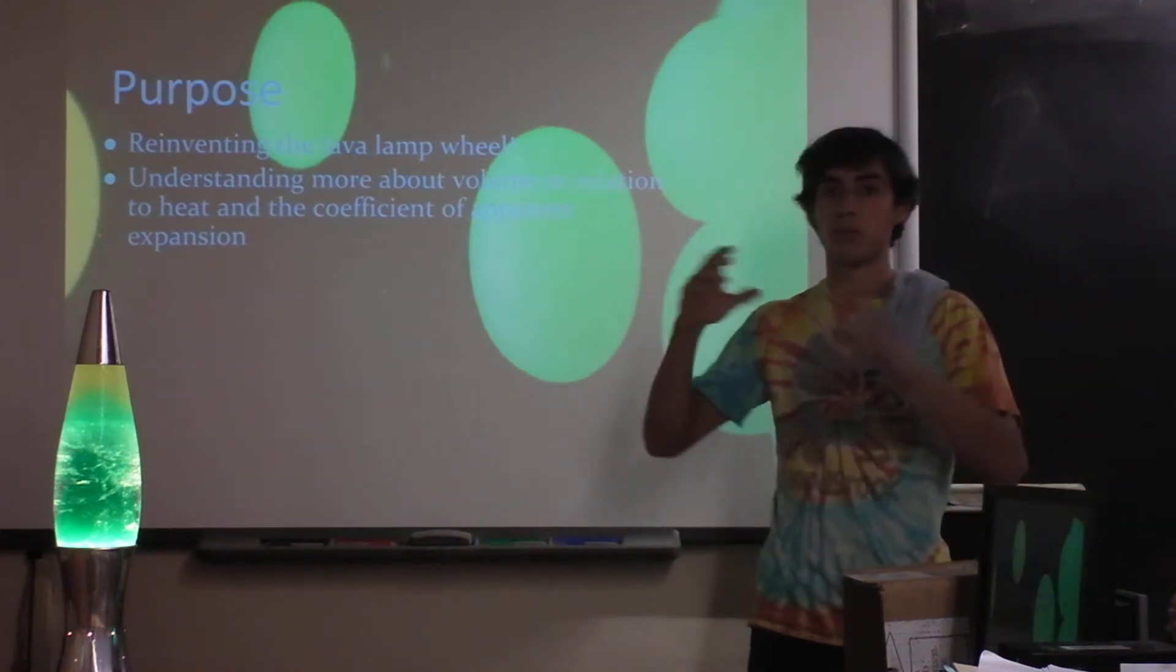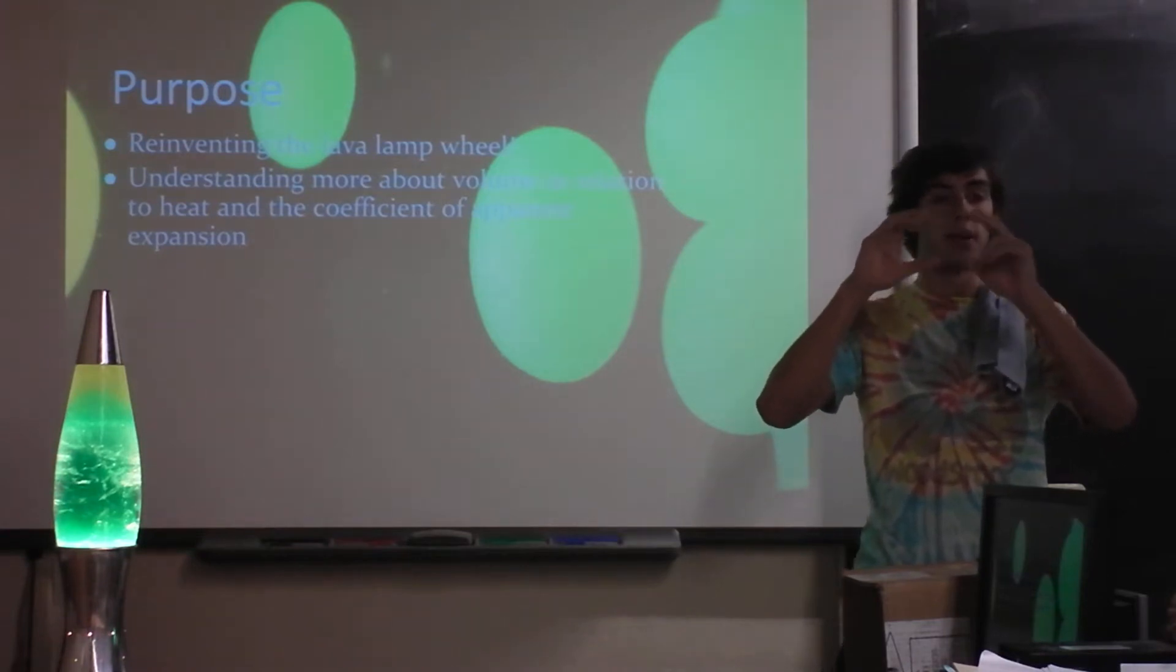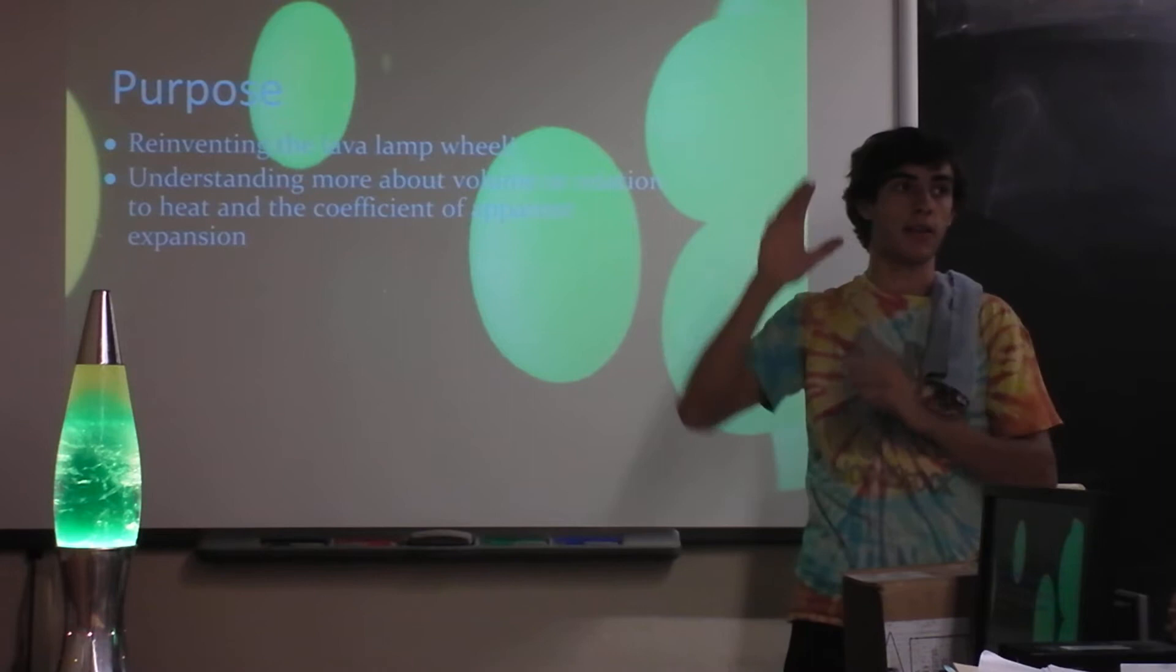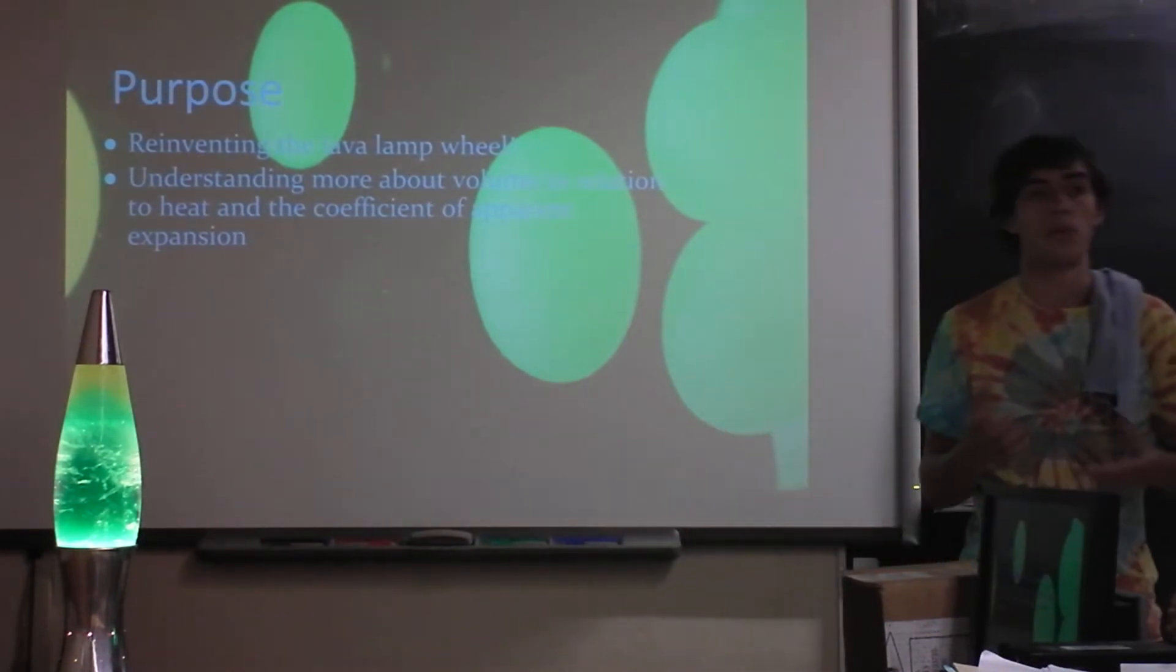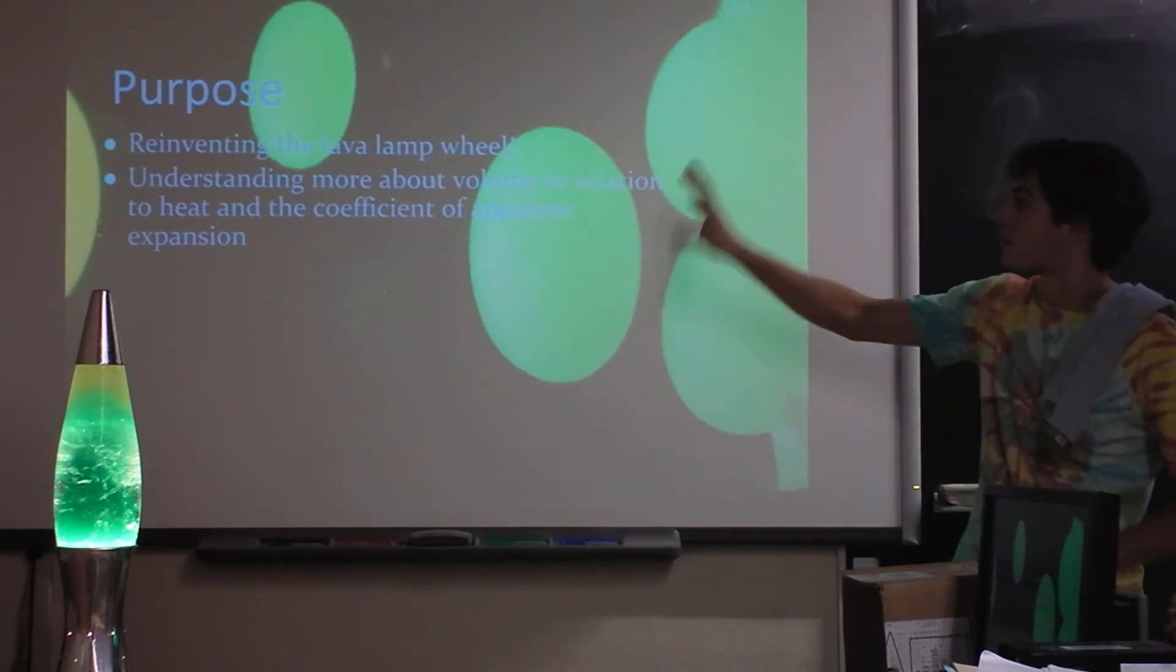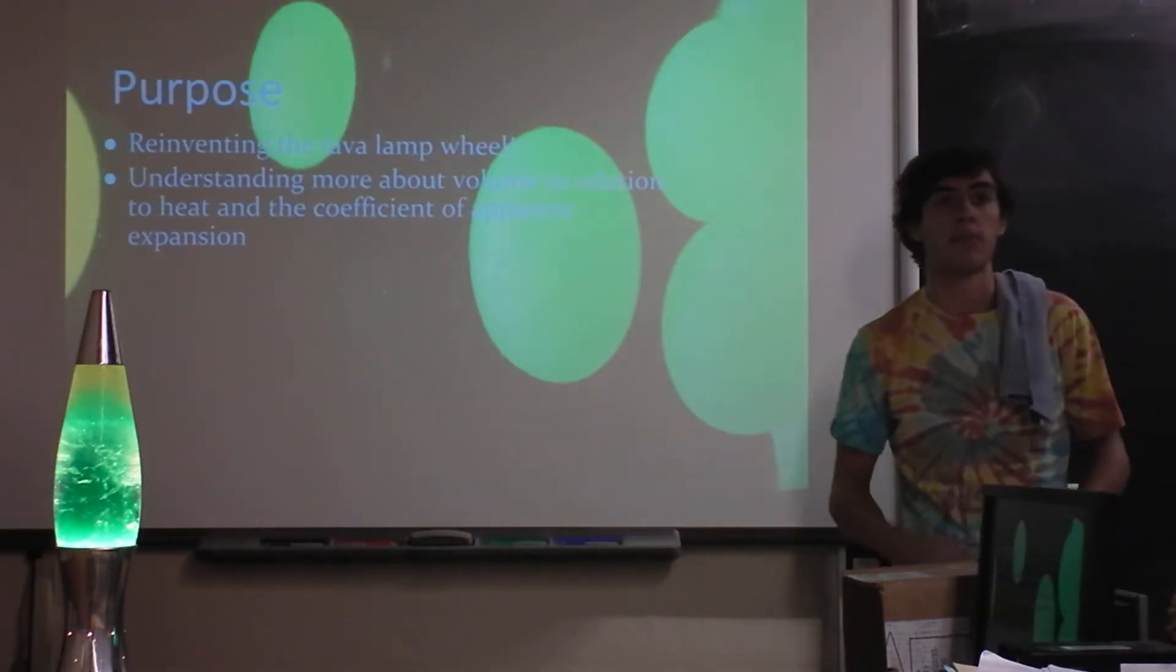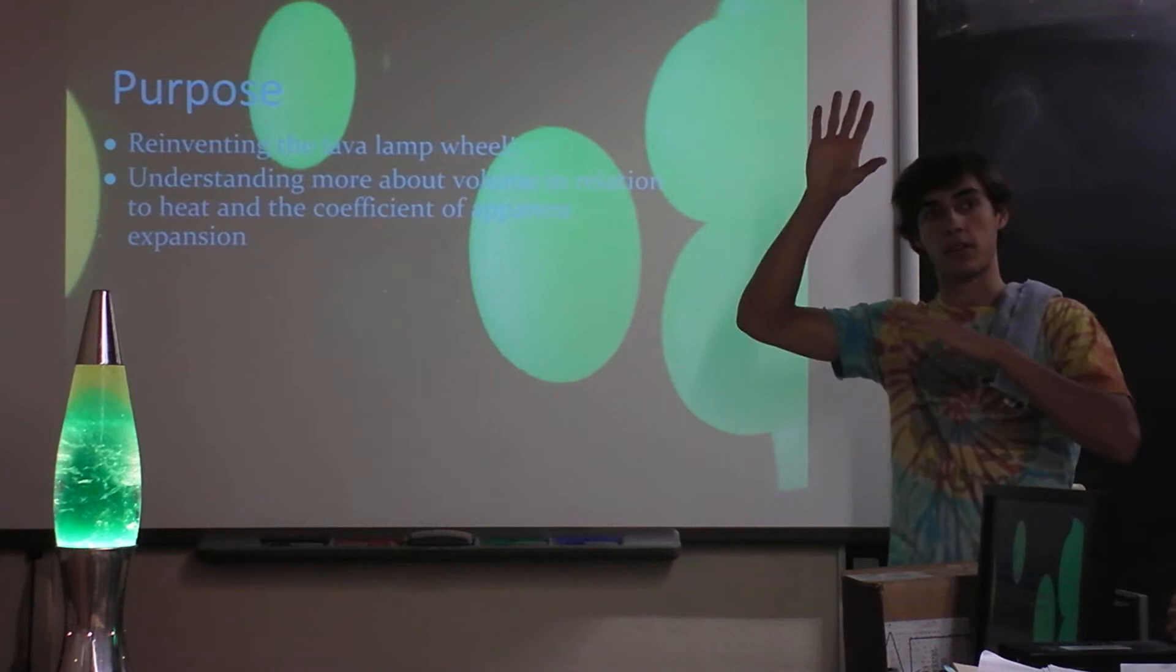so a regular lava lamp works. You have paraffin wax at the bottom of a lava lamp and water throughout it. And as the lamp gets hotter, the wax rises. It kind of rises in these blobs. And so I thought, well, what if you take something that's less dense than water and cool it to the point where it drops?